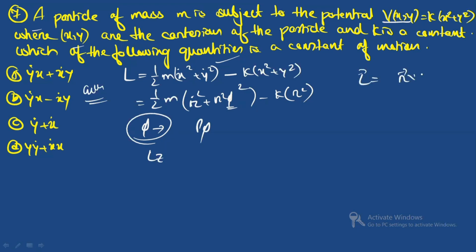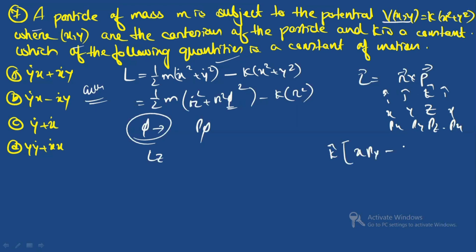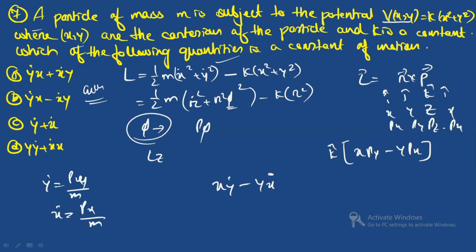The angular momentum L = r × p, and its z-component is L_z = xp_y − yp_x. Since p_x = mẋ and p_y = mẏ, we can write L_z ∝ xẏ − yẋ. The correct option is option B: xẏ − yẋ is the constant of motion.